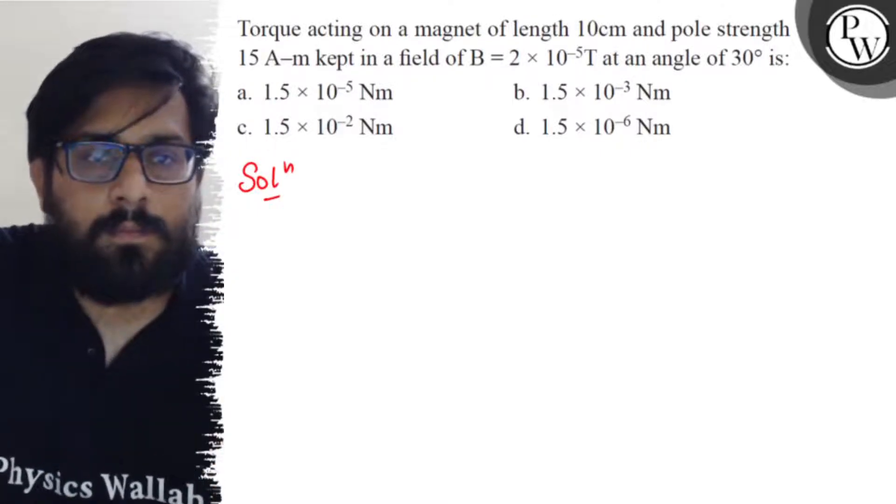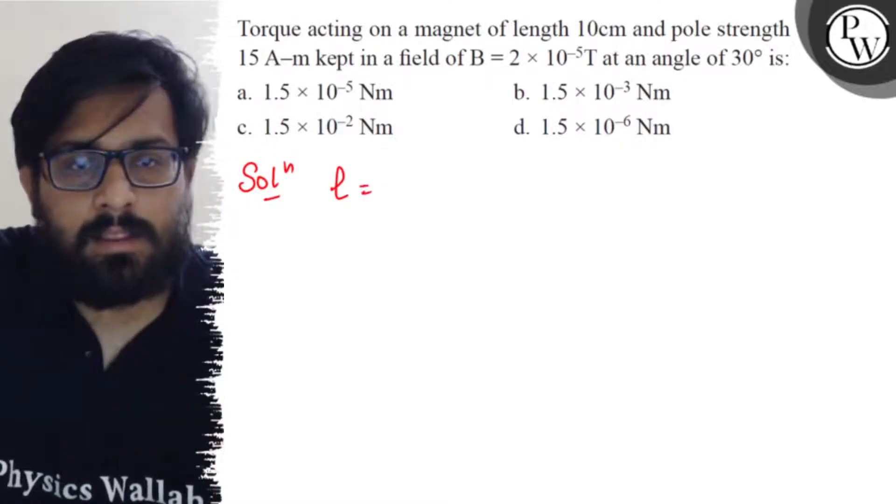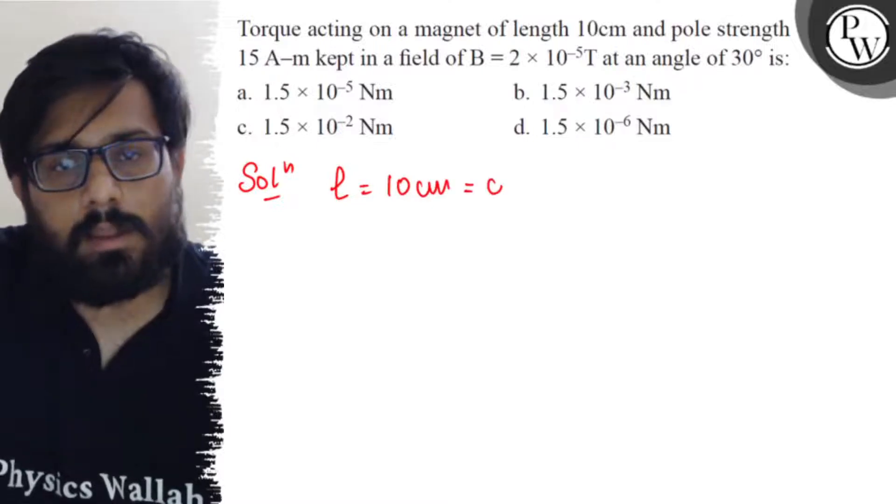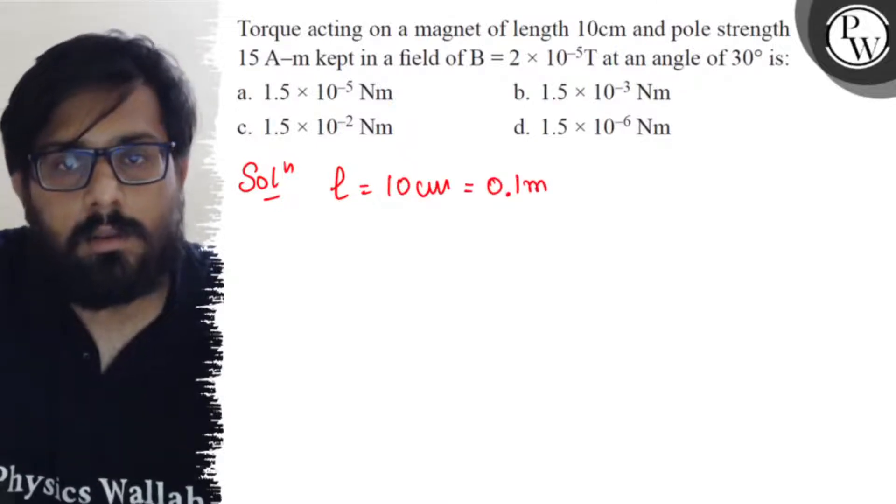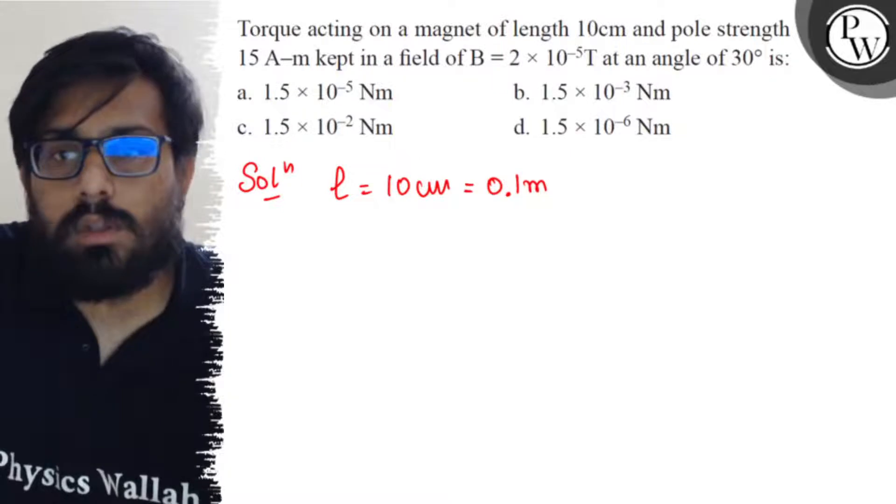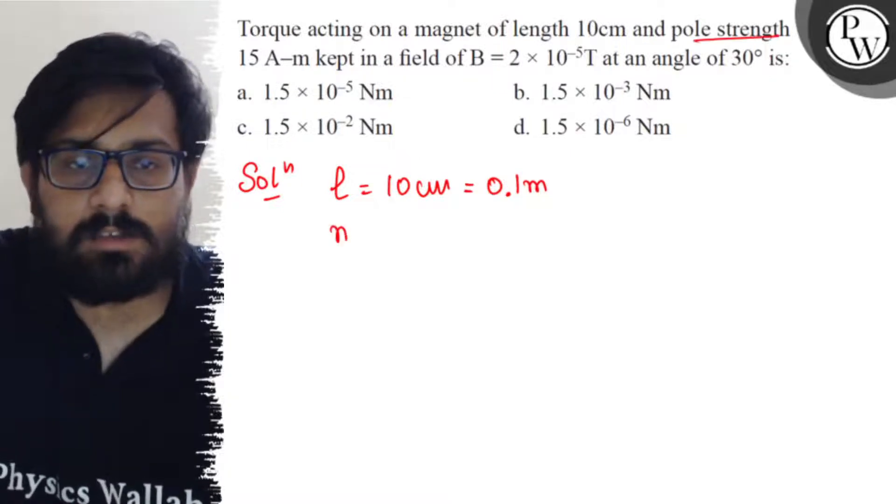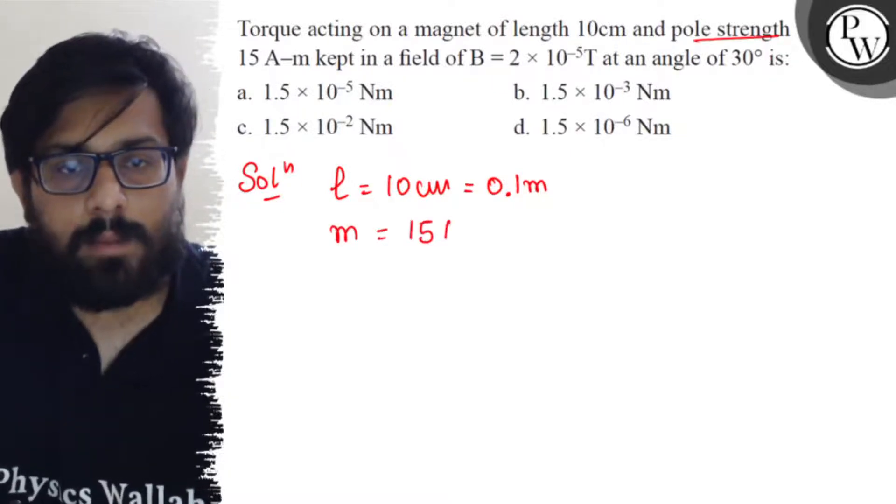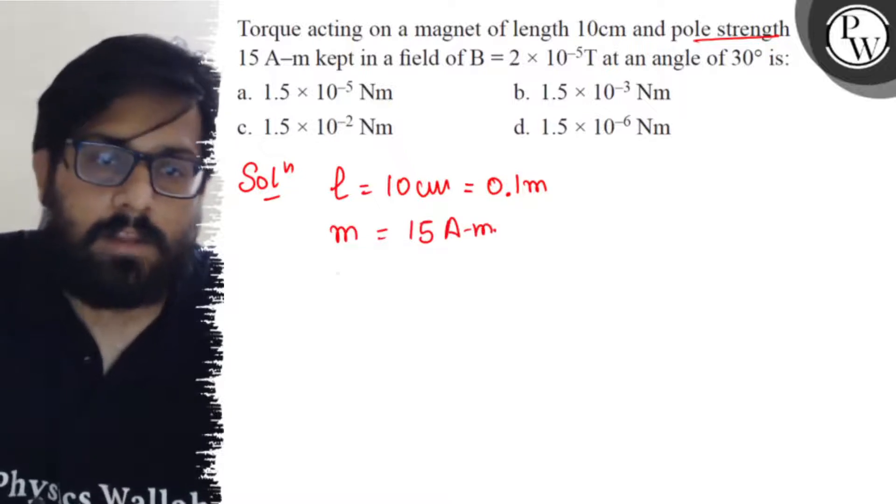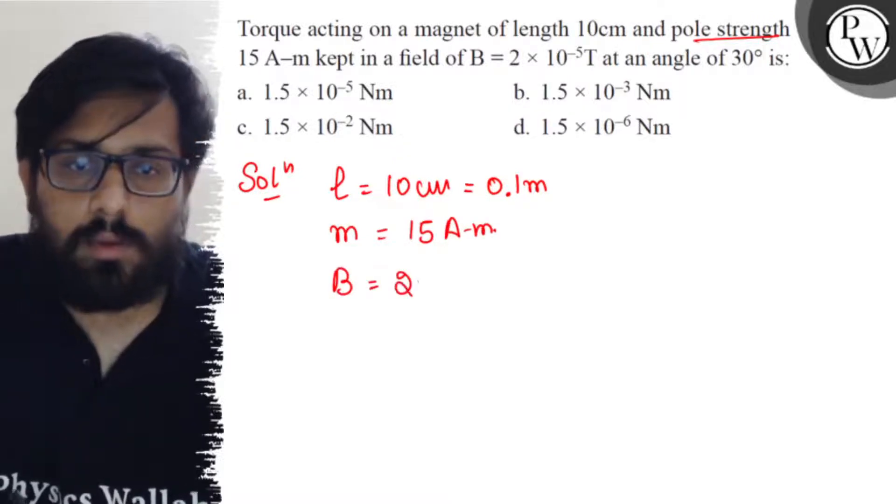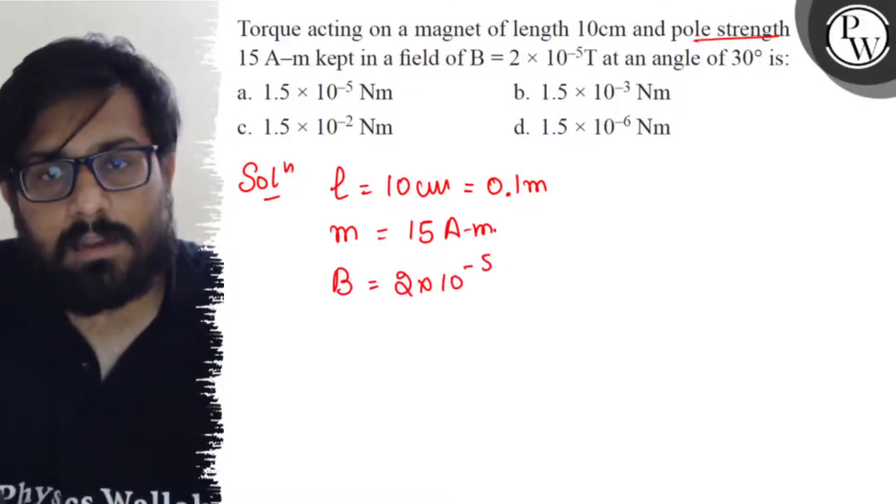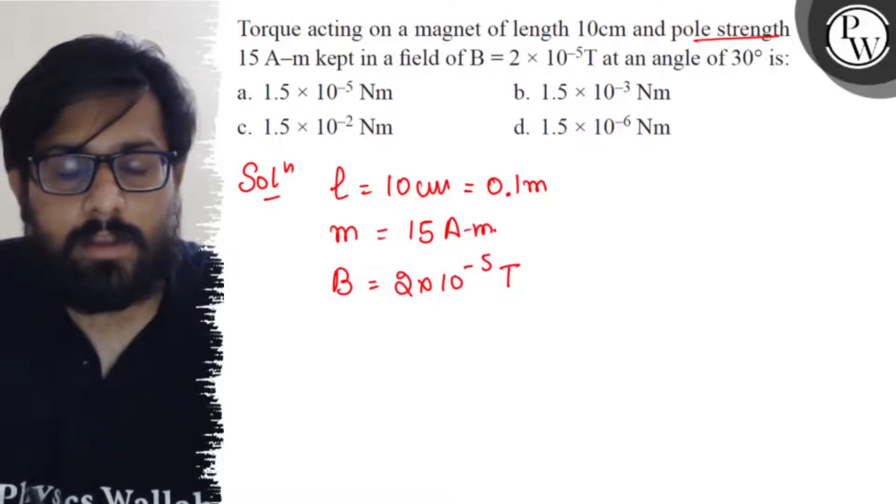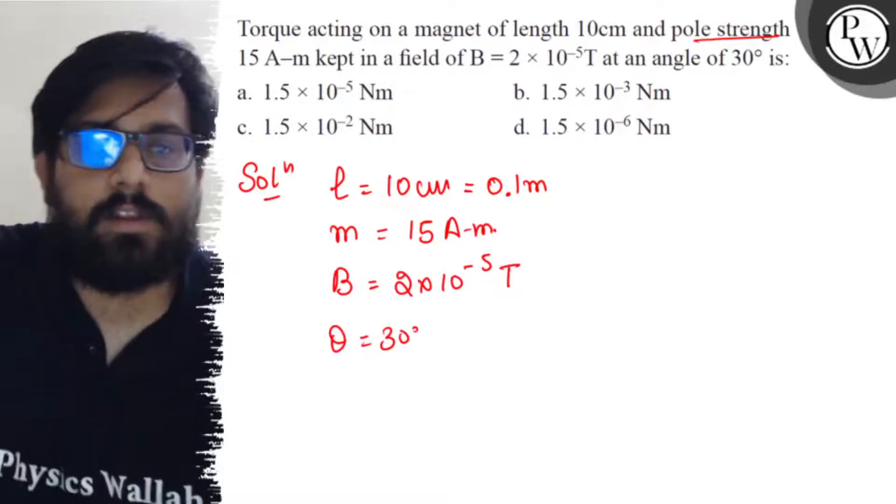The magnet length is 10 centimeters, converting into meters, so it comes out to be 0.1 meters. The pole strength small m is 15 ampere meter. The value of the magnetic field is given as 2 into 10 to the minus 5 tesla, and the value of theta is also given as 30 degrees. I have to calculate the value of torque.